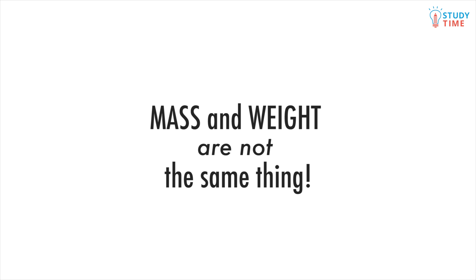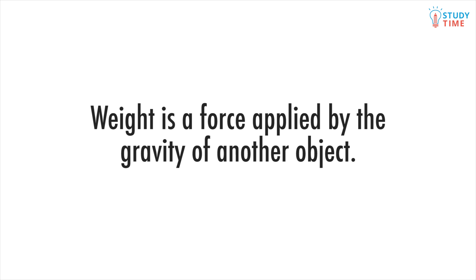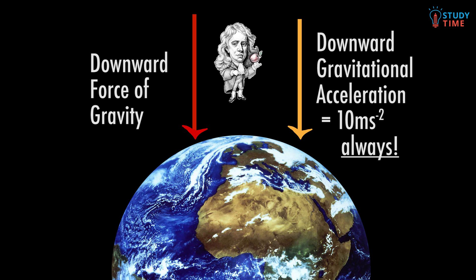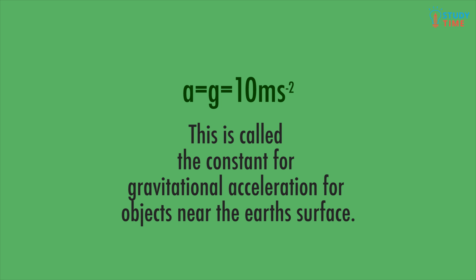Mass and weight are not the same thing although we often swap the words around as if they are. Weight is a force applied by the gravity of another object. Gravity is a very weak force but the bigger and closer an object gets the stronger the gravitational force. The earth is very heavy and very close right so its gravitational force upon us is pretty strong. Earth's gravity makes objects accelerate at about 10 meters per second per second. This is called the constant for gravitational acceleration for objects near the earth's surface.